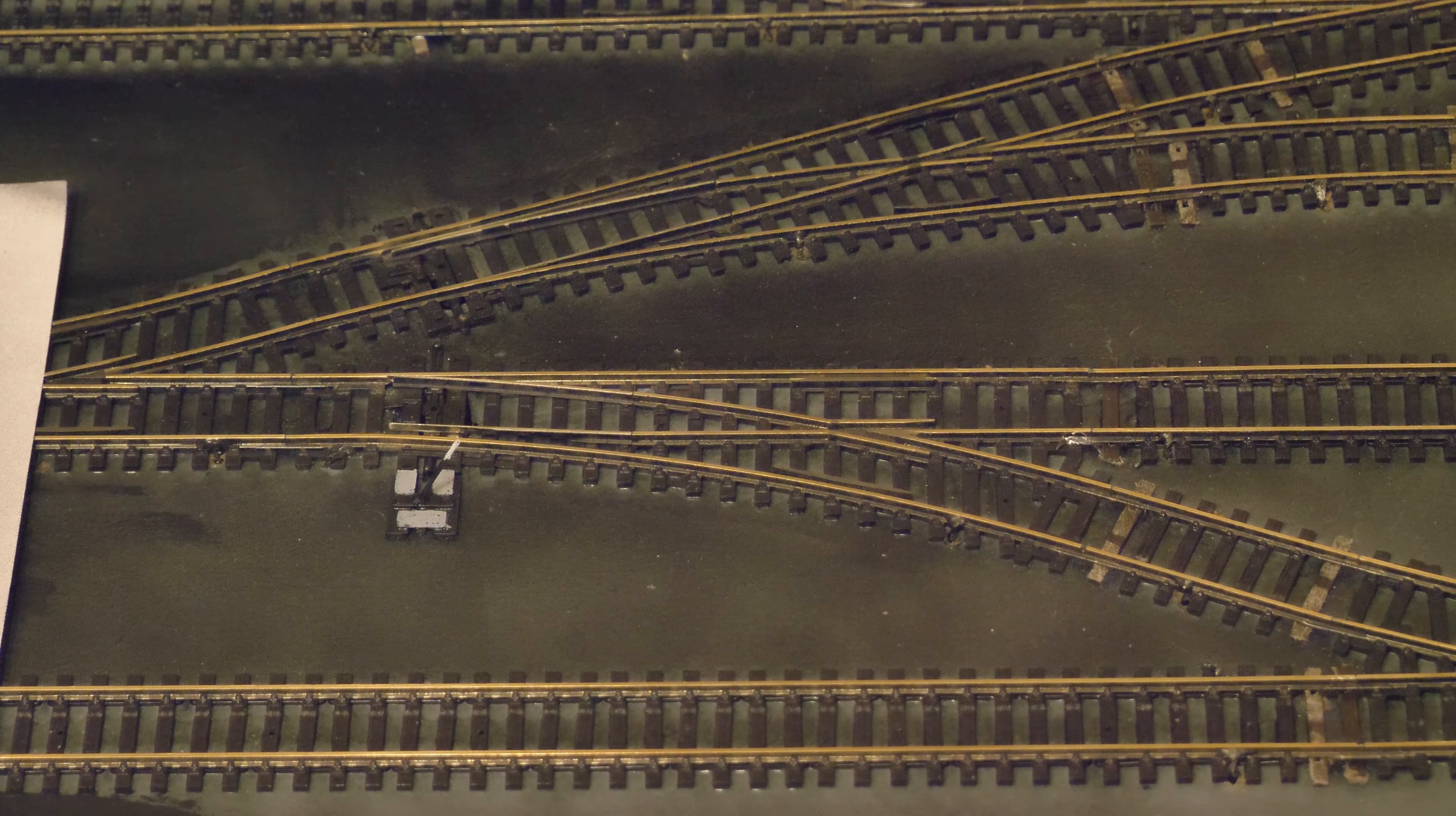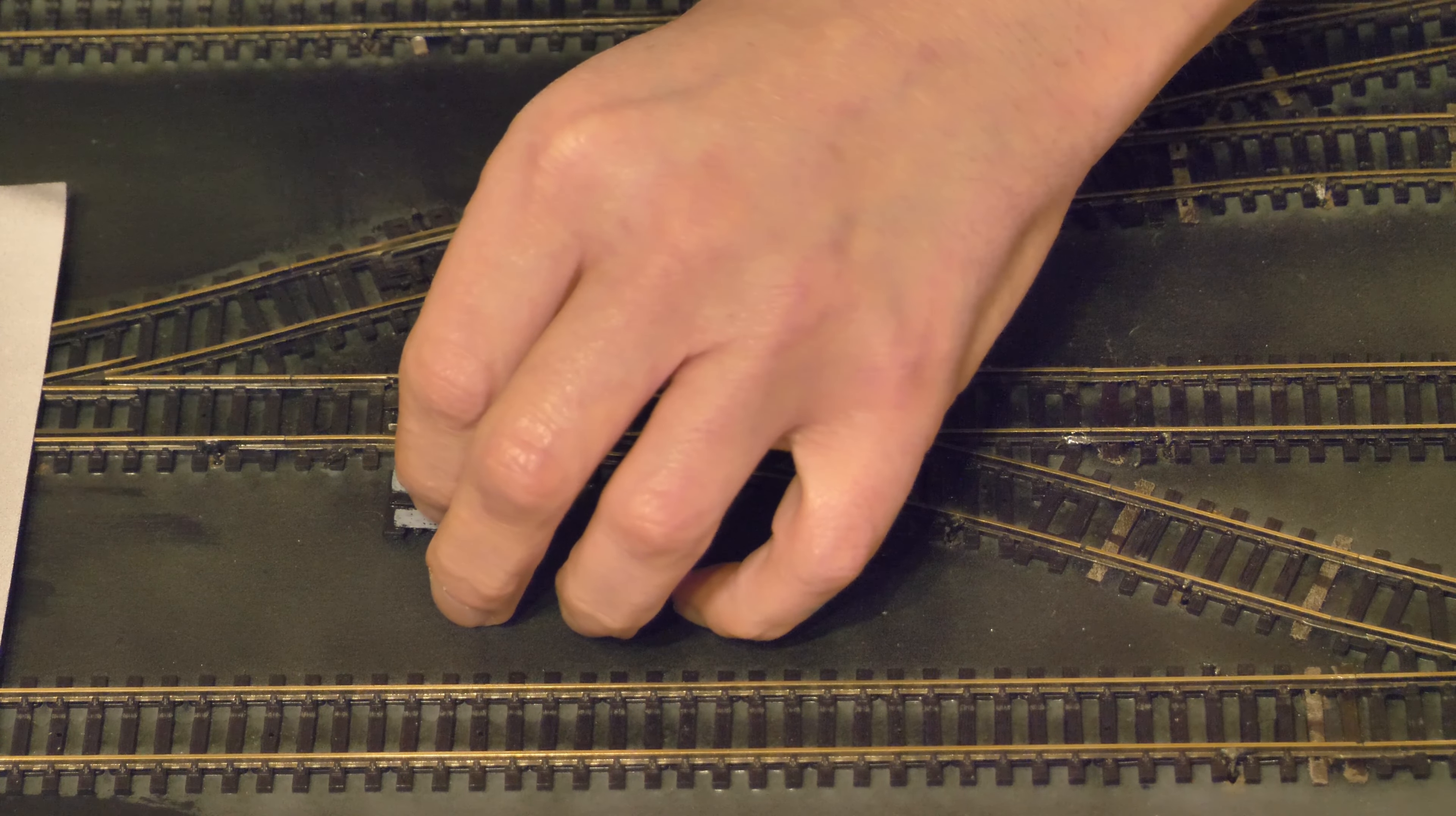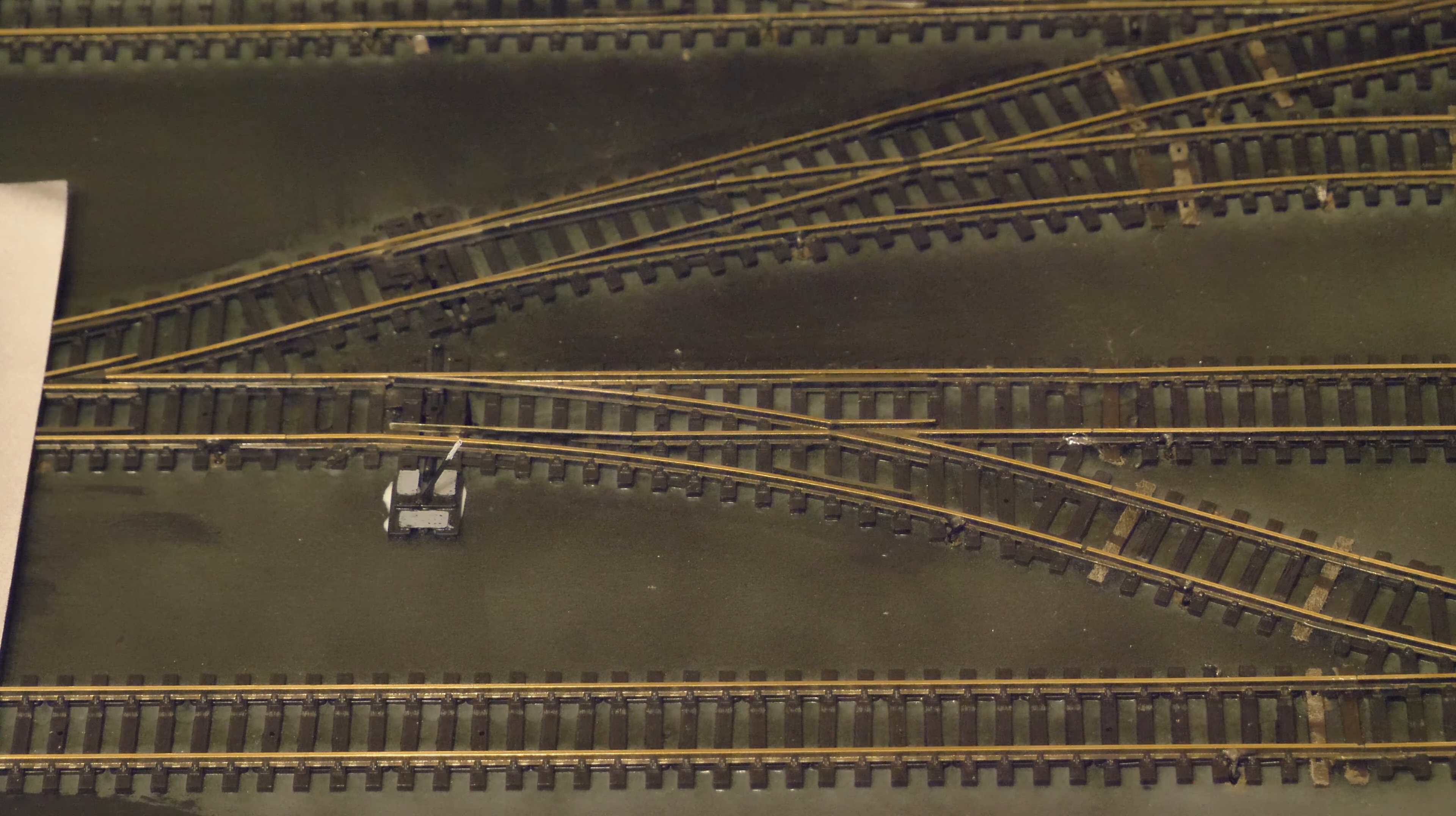So I always use this PVA glue. I do find it so much easier. If I need to move them, I can just lift them with a bit of water. This is quite a good wood PVA, so it won't lift as easy. So when I'm doing the ballasting and I soak the layout, they're not going to move, but the glue will loosen and then reset once it's all dry.